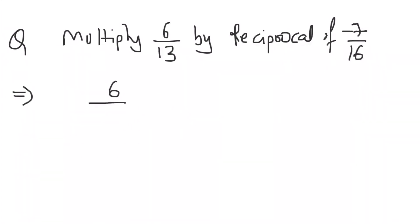Question: multiply six upon thirteen by reciprocal of minus seven upon sixteen. That means six upon thirteen multiplied by the reciprocal of this number. The reciprocal of this number is sixteen by minus seven.